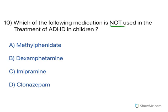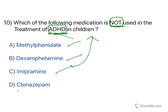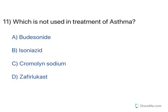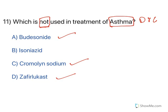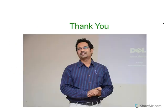Which medication is not used in treatment of ADHD — attention deficit hyperactivity disorder? Methylphenidate, Dexamphetamine, and Imipramine are all used to treat ADHD. Clonazepam is a benzodiazepine and is not used to treat ADHD. The answer is D. Next: which is not used to treat asthma? Asthma can be treated by budesonide, cromoglicate sodium, and zafirlukast. Isoniazid is used to treat tuberculosis — it is a very narrow spectrum drug effective only against tuberculosis — and cannot be used for asthma. Thank you for watching. If you like the video content, do subscribe.